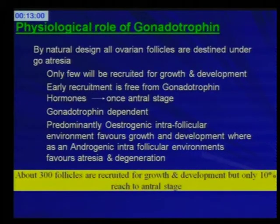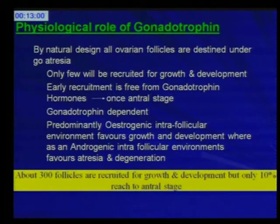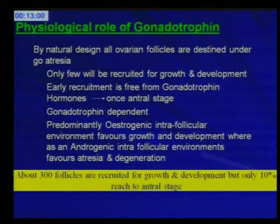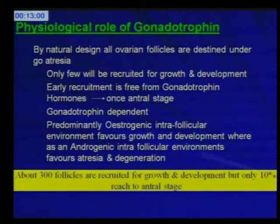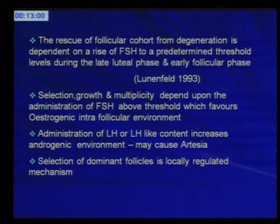How do gonadotropins work? By natural design, all ovarian follicles are destined to undergo atresia and only a few will be recruited for growth and development. This early recruitment is free from gonadotropin hormones. Once the antral follicle stage is reached, they are dependent on gonadotropins, and predominantly estrogenic intra-follicular involvement favors growth and development. The presence of androgenic intra-follicular involvement will favor atresia and degeneration. The rescue of a follicle cohort from degeneration is dependent on the rise of FSH to a predetermined threshold level during the late luteal phase or the early follicular phase.